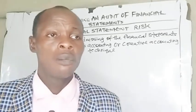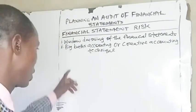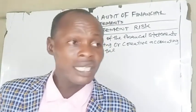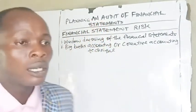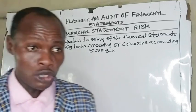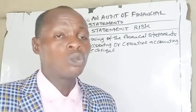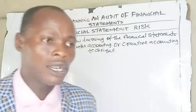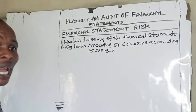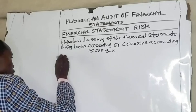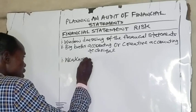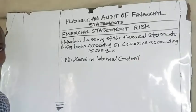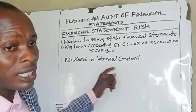I want to examine the connection between business risk and financial statement risk. Failure of management to deal with business risk could lead to financial statement risk. For instance, weakness in internal control of an entity is a business risk, which could result in misstatements in the financial statements.